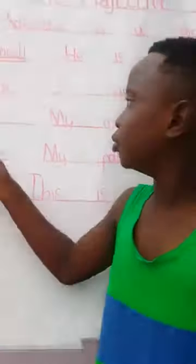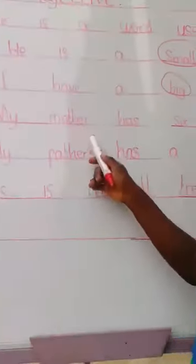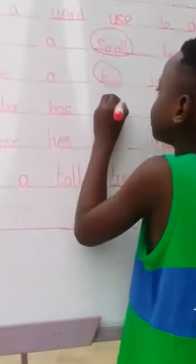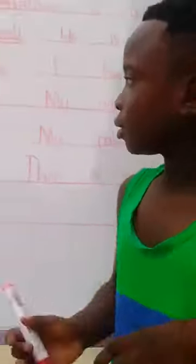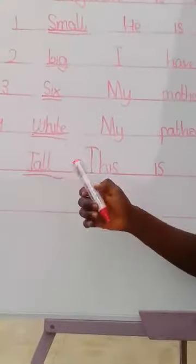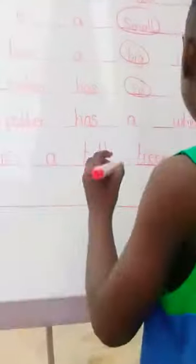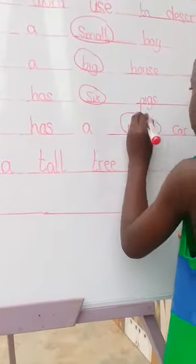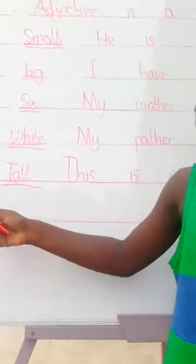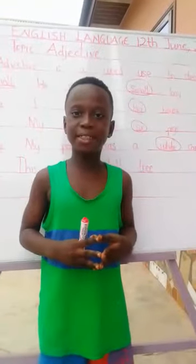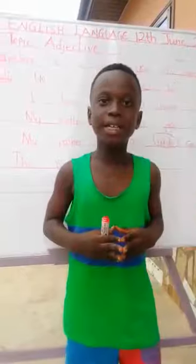Example three: six — my mother has six things. Which one is the adjective? Six. So six is the adjective. Example four: white — my father has a white car. Which one is the adjective? So white is the adjective. Example five: tall — this is a tall tree. So tall is the adjective.